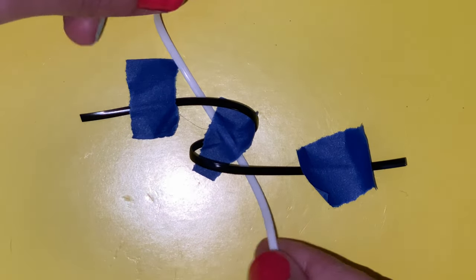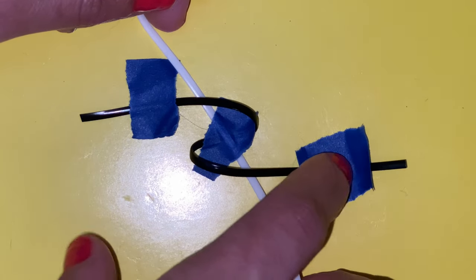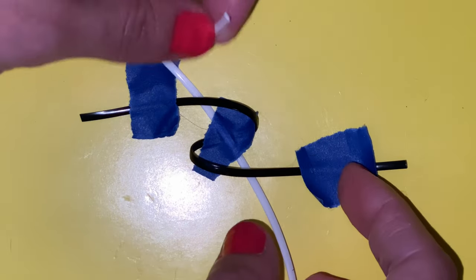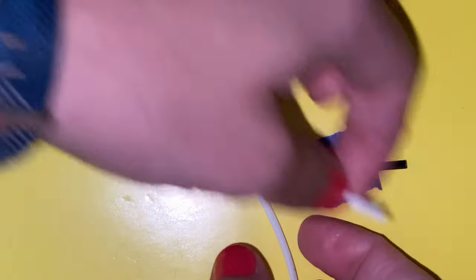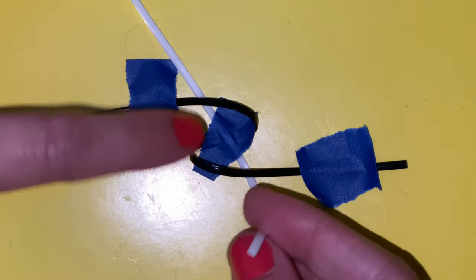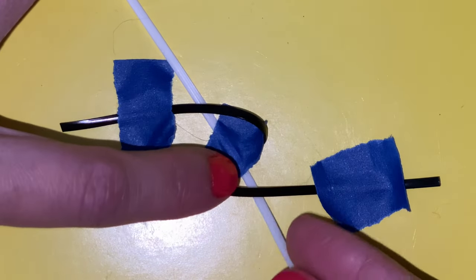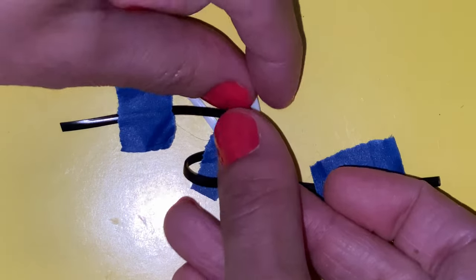So now essentially what the tape is doing is it's holding down my loops and telling me where my white strings need to go. This white string is next to this one and this one needs to be held down. This guy over here can't do that because he's all the way over there. I have to use this one. I'm going to go over this loose string here and underneath this loop.